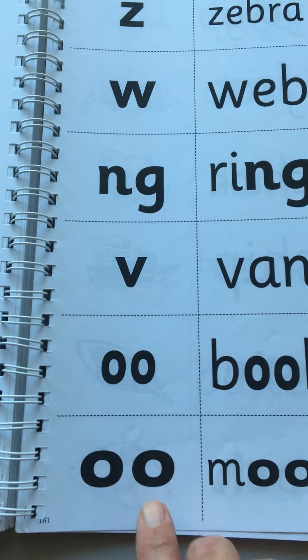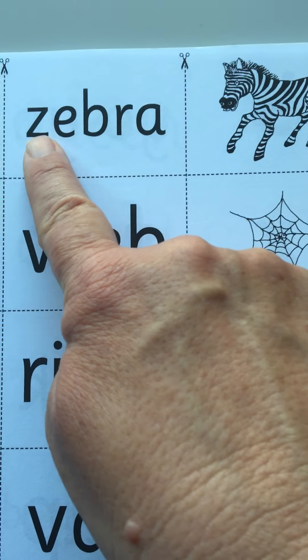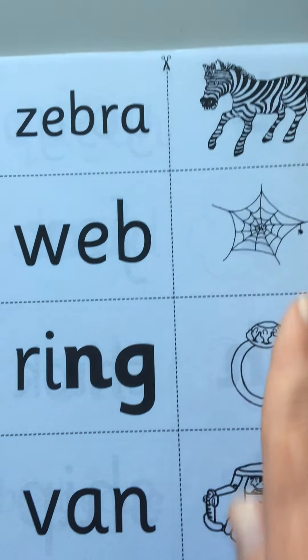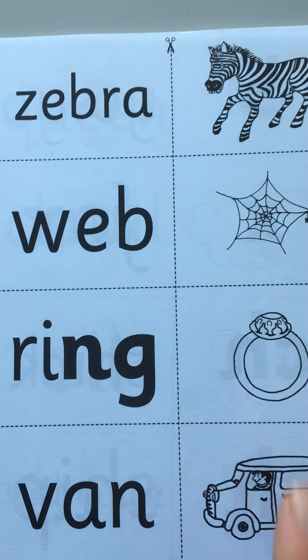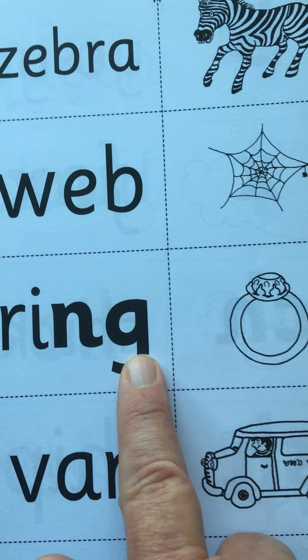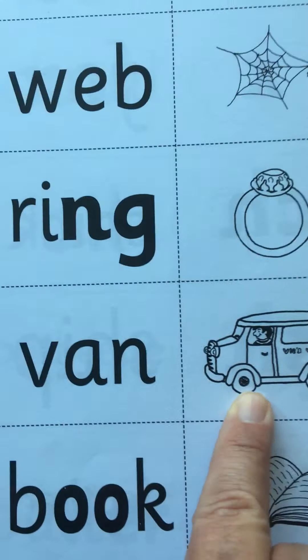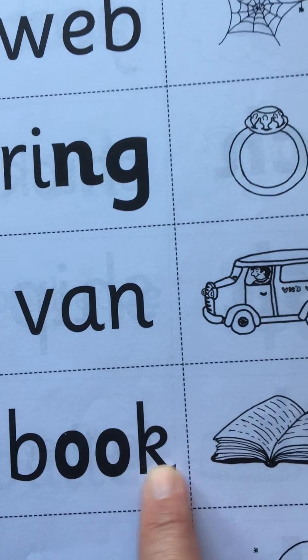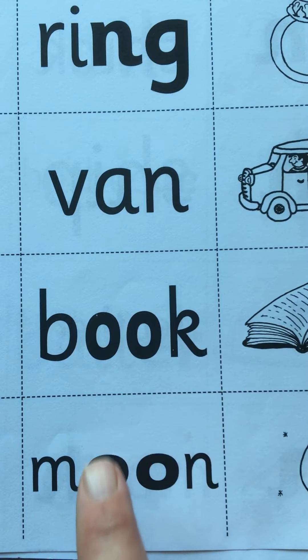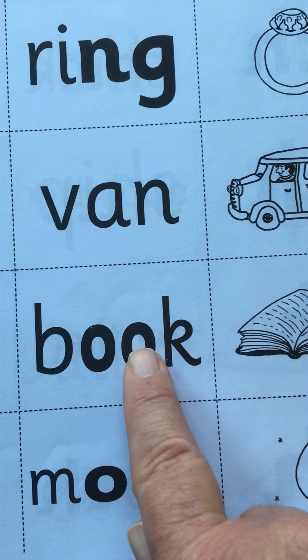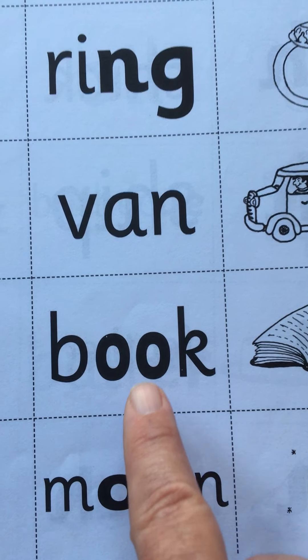Let's do the pictures. Zebra, zebra, web, web, web, ring. This is a ring, and van, book, moon. Remember, these two have the same letters but they have two different sounds.